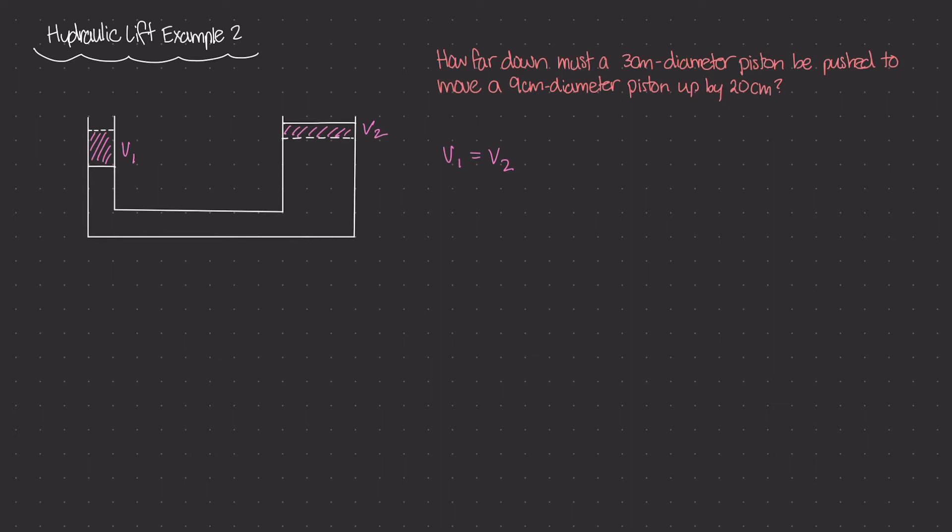Now we can use this relationship to actually figure out how far down piston one actually went down. So if I were to call this distance right here d1 and this distance right here d2, then d1 is the amount that piston one moved downwards. And again we can use this relationship to figure out what d1 is.